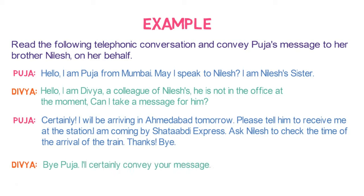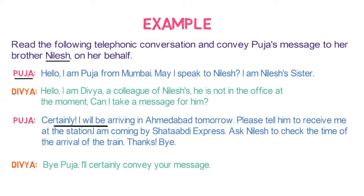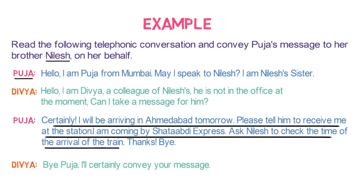After analyzing the conversation, we understood that the message is for Nilesh. It is from her sister Puja. She is informing that she will be arriving in a train the next morning and Nilesh needs to come to receive her. This message will be delivered by Divya as Puja has already informed Divya to deliver the message. Let's write the message step by step.